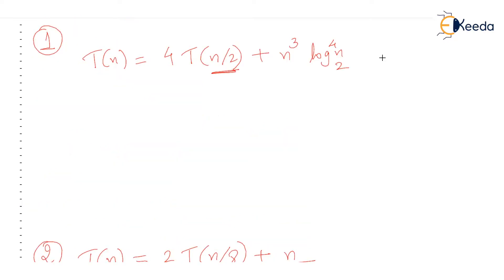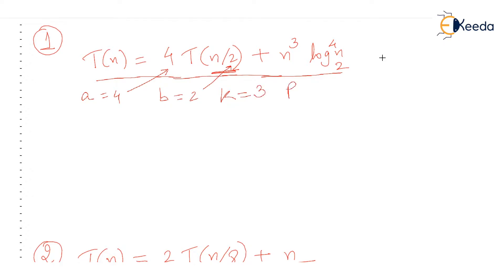First of all, is this recurrence relation in the form of the Master's Theorem? Yes, because we see that a is 4, b is 2, k is 3 — that is n raised to k — and log raised to p of n to the base 2, so p is 4. We have found four values and this recurrence relation is really in the form of a·T(n/b) + n^k · log^p(n).